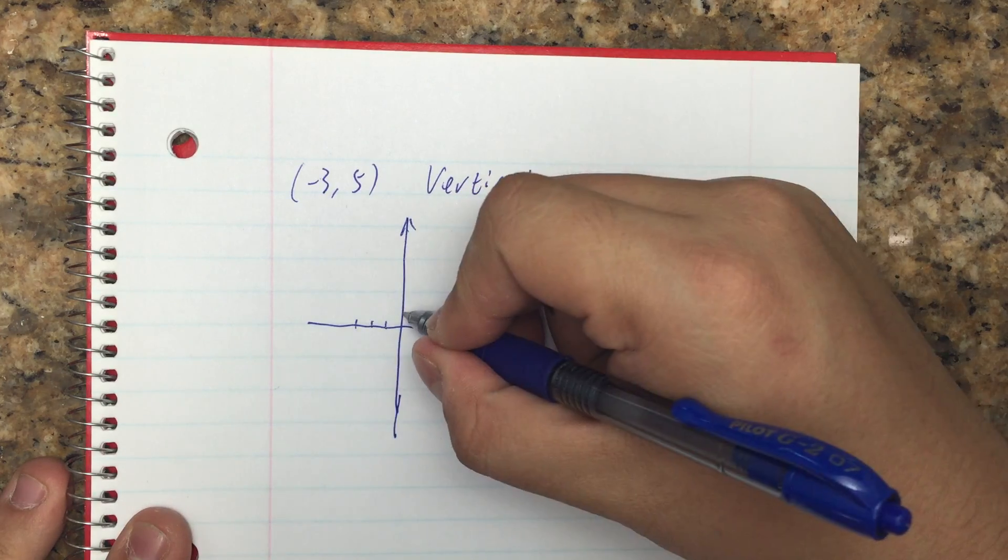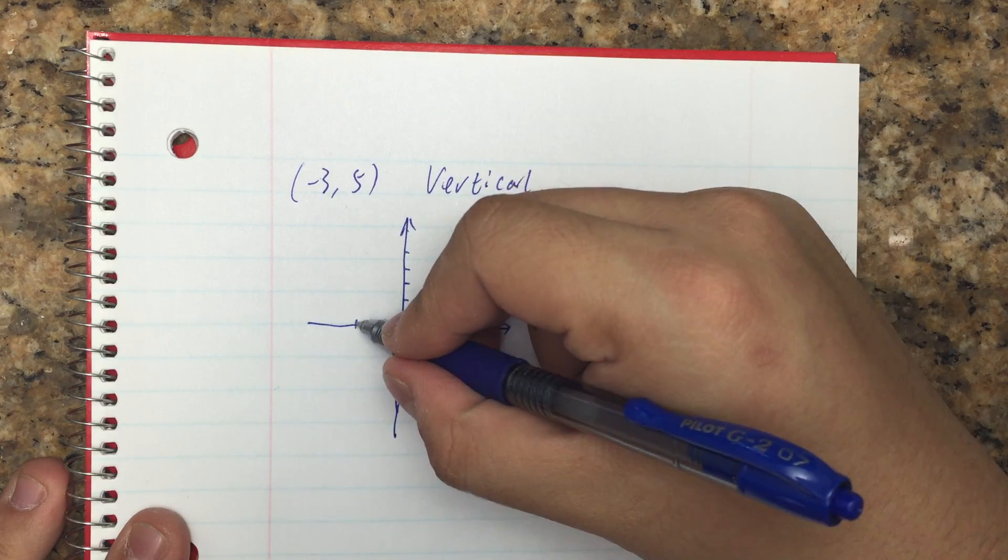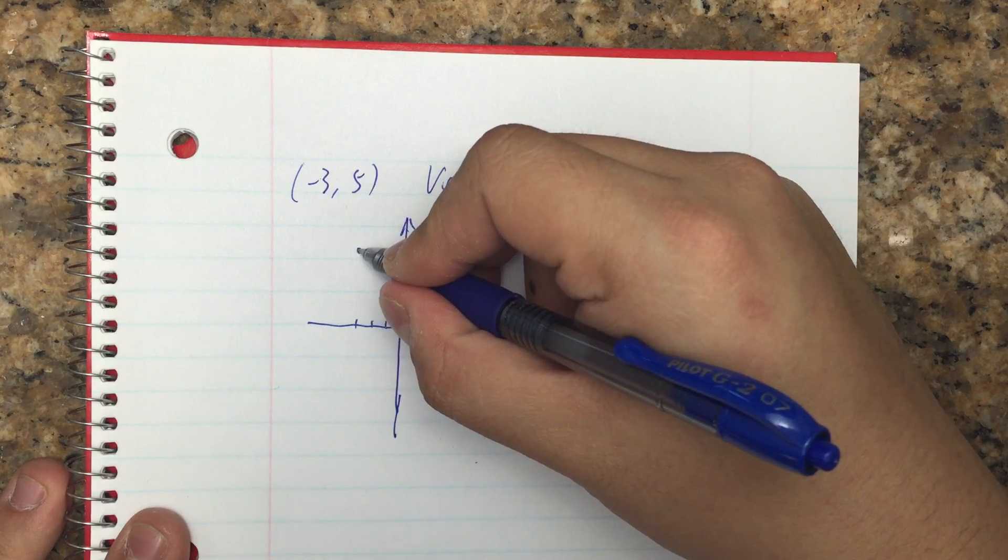Draw the point (-3, 5), which is 3 units to the left, 5 units up on my xy plane.